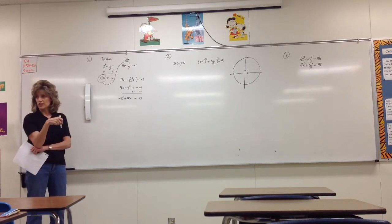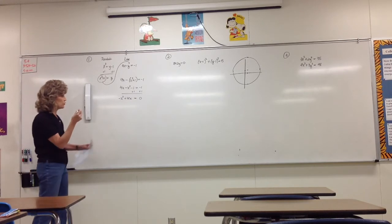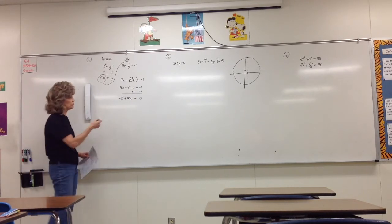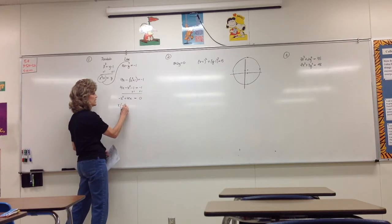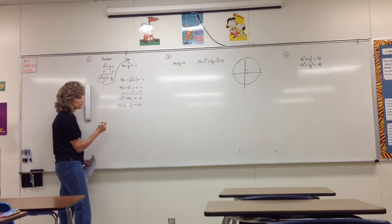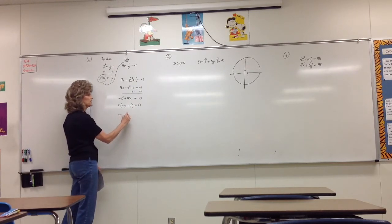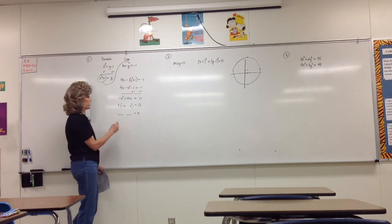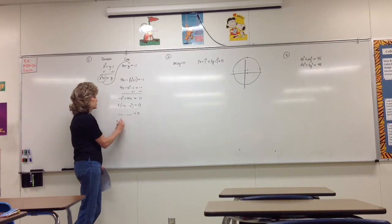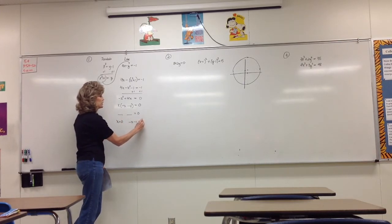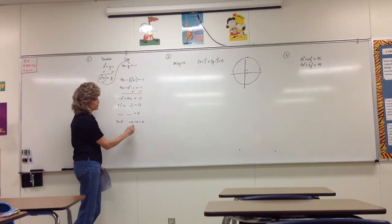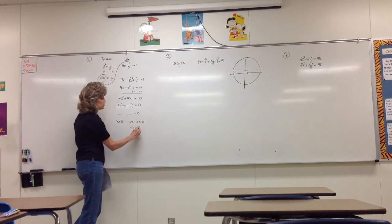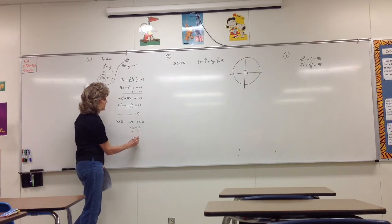When we have a quadratic equation, we usually try to factor first. We can factor out either x or negative x. Factoring out x gives us x times (negative x plus four) equals zero. Using the zero product property, either x equals zero or negative x plus four equals zero.